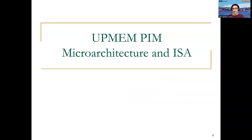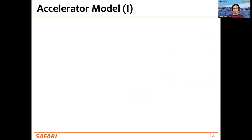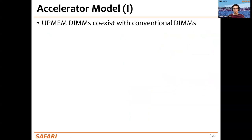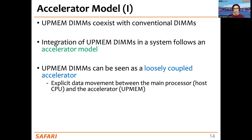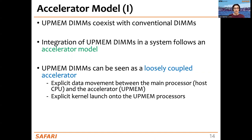Let's talk about the Upmem PIM microarchitecture and ISA. Before going into details, we need to mention the type of computational model that Upmem provides. It's what we call the accelerator model, where the Upmem DIMMs coexist with conventional DIMMs. In this accelerator model, the Upmem DIMMs can be seen as a loosely coupled accelerator, which means that data needs to be explicitly moved between the main processor — the host CPU — and the accelerator, which are the Upmem DIMMs. The kernel or function that runs on the Upmem processors also needs to be explicitly launched.